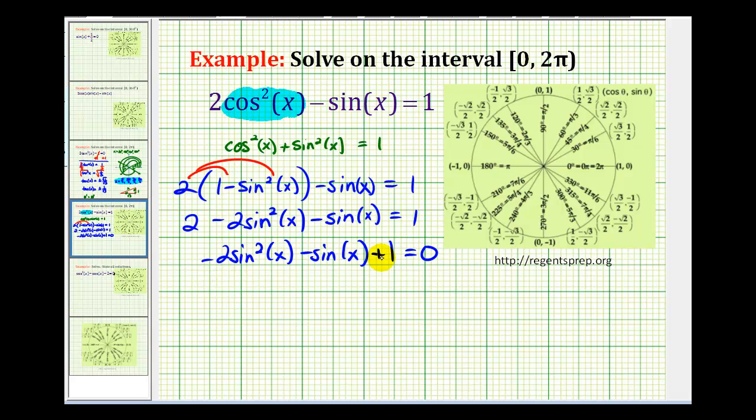Now whenever we try to factor something, we always want to have the leading coefficient positive. So let's factor out a negative one. So we'd have 2sin²(x) + sin(x) - 1 = 0.